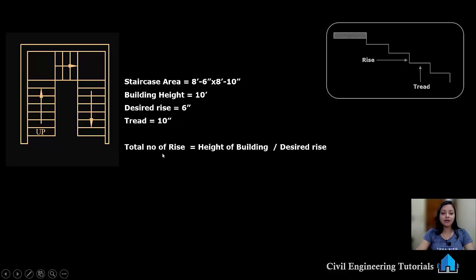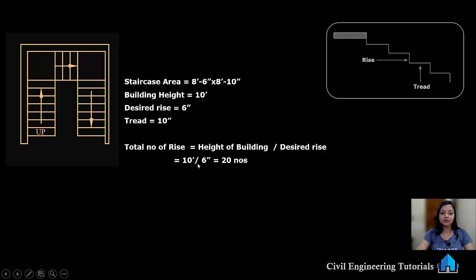Now we have to calculate the total number of rises. Total number of rises equals height of building divided by desired rise. That is 10 feet divided by 6 inches, and we are getting a total number of rises of 20 numbers.